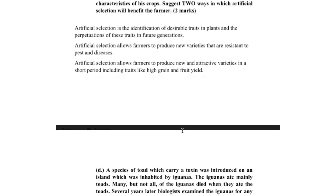So how is this process important to farmers? Farmers can use this process to produce new varieties that are resistant to pests and diseases. That will save the farmer money on things like agrochemicals. Secondly, artificial selection allows farmers to produce new and attractive varieties in a short period of time. This is going to boost the farmer's income when he gets traits like this over a short period of time.